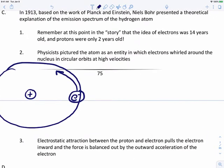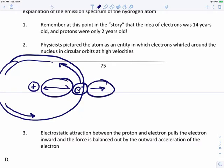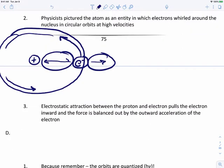Because this electron is spinning around the nucleus at such a fast speed, the only thing keeping it in place is the balance of two forces: the attraction between the electron and the proton pulling it inward, and the centripetal force from spinning so quickly pushing it outward. These two forces — the force of attraction and the centripetal force — keep the electron on its orbital path.